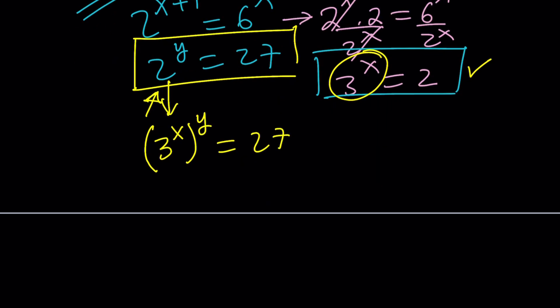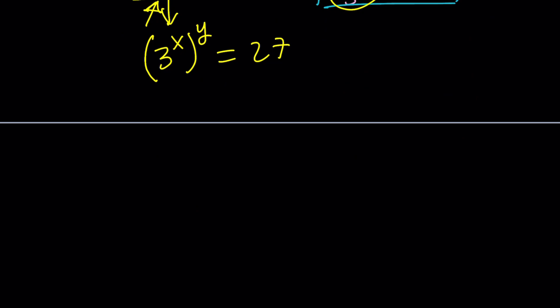Do you see what I see? Hopefully you do. Now when you have a to the power m to the power n, remember, we are supposed to multiply the exponents. This is called power of a power property, or some people call it super power property. Whatever you want to call it, it doesn't matter. And then now we can write it as 3 to the power x, y, and 27 is definitely 3 to the third power.